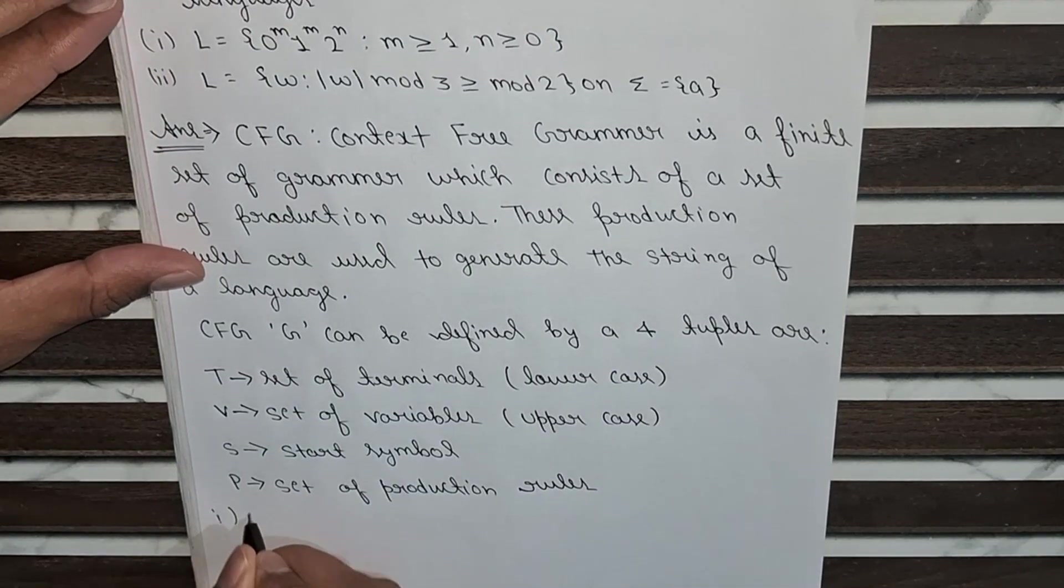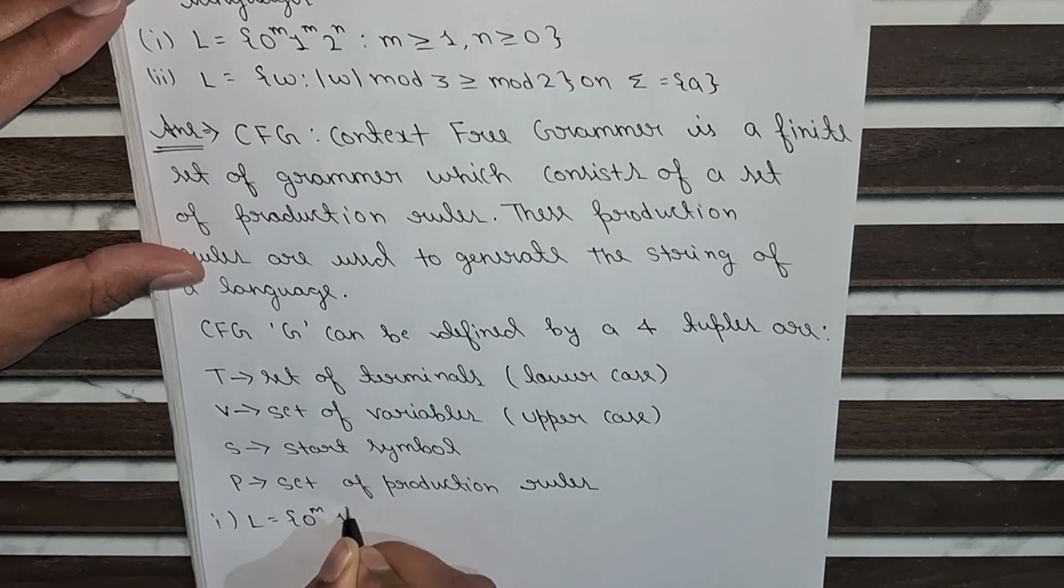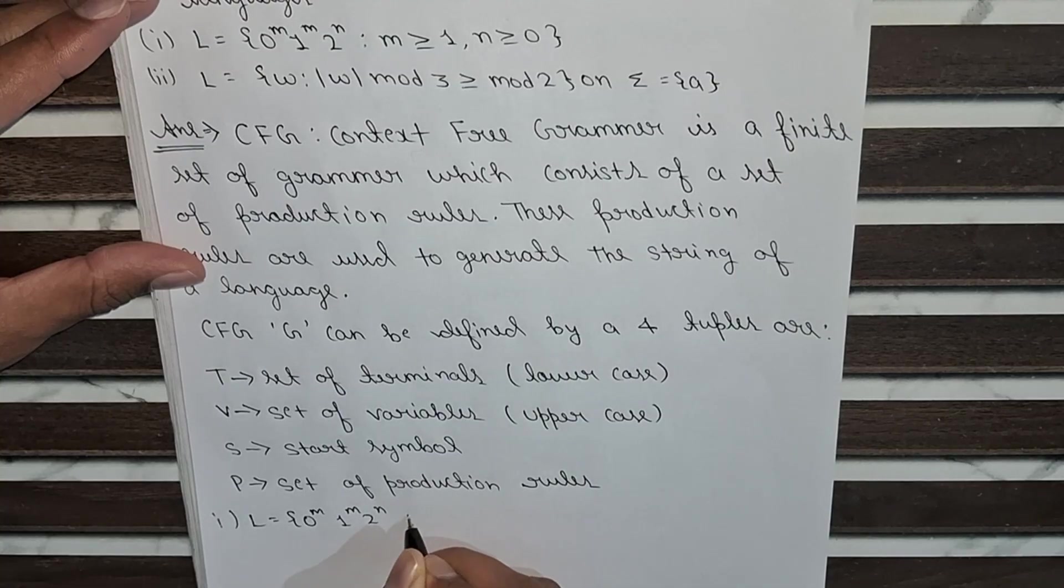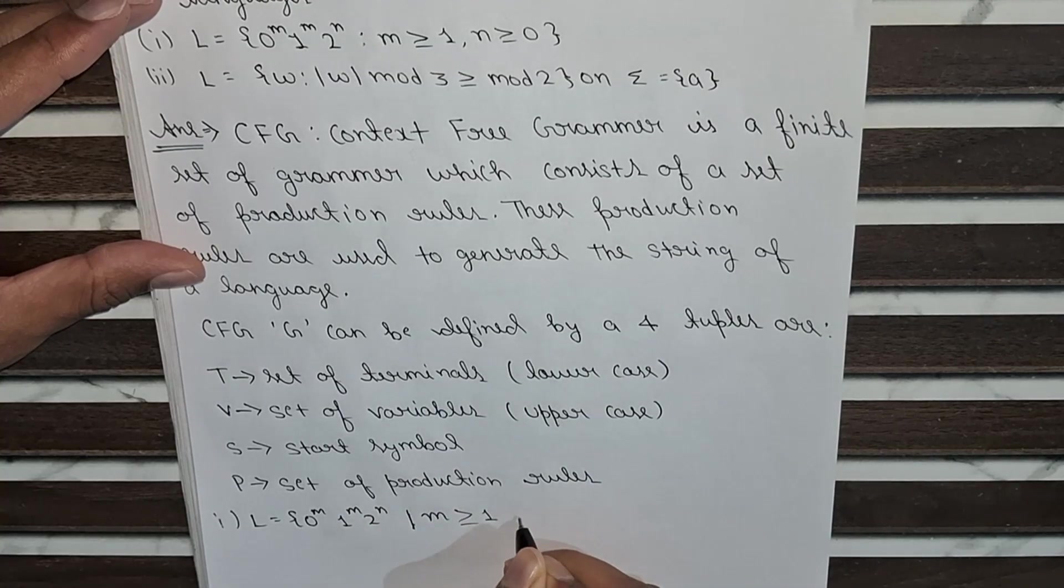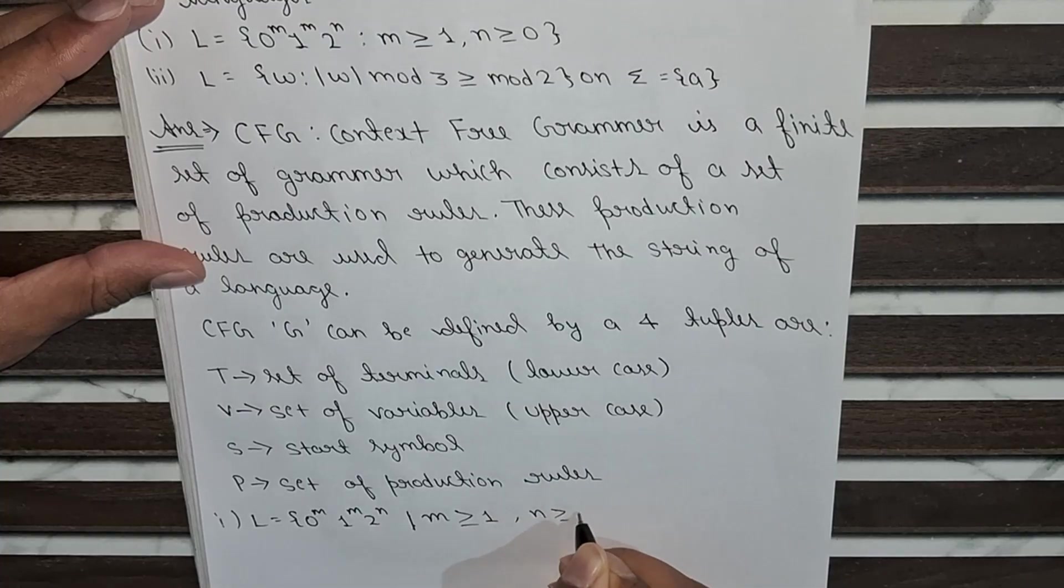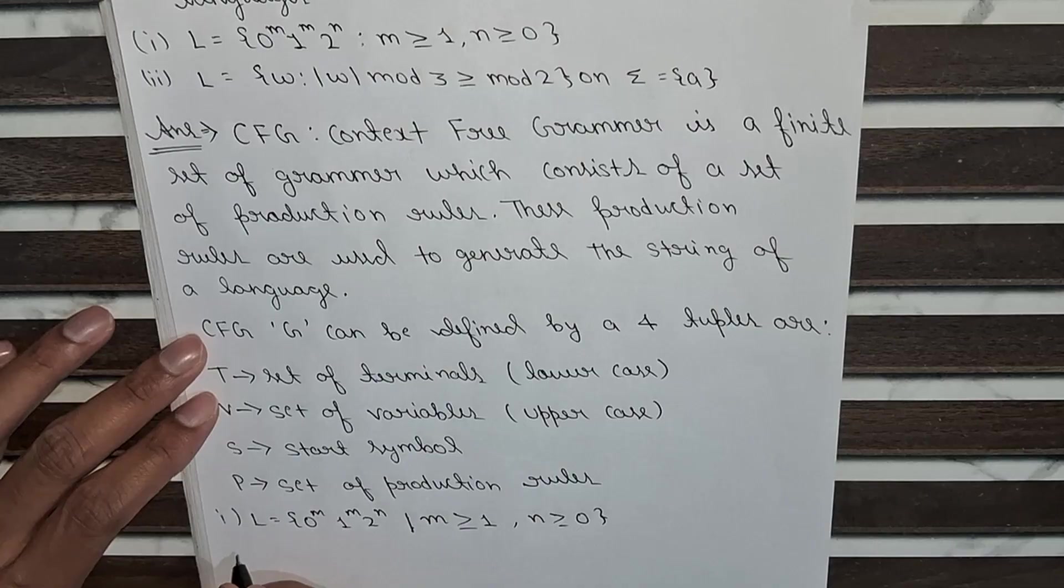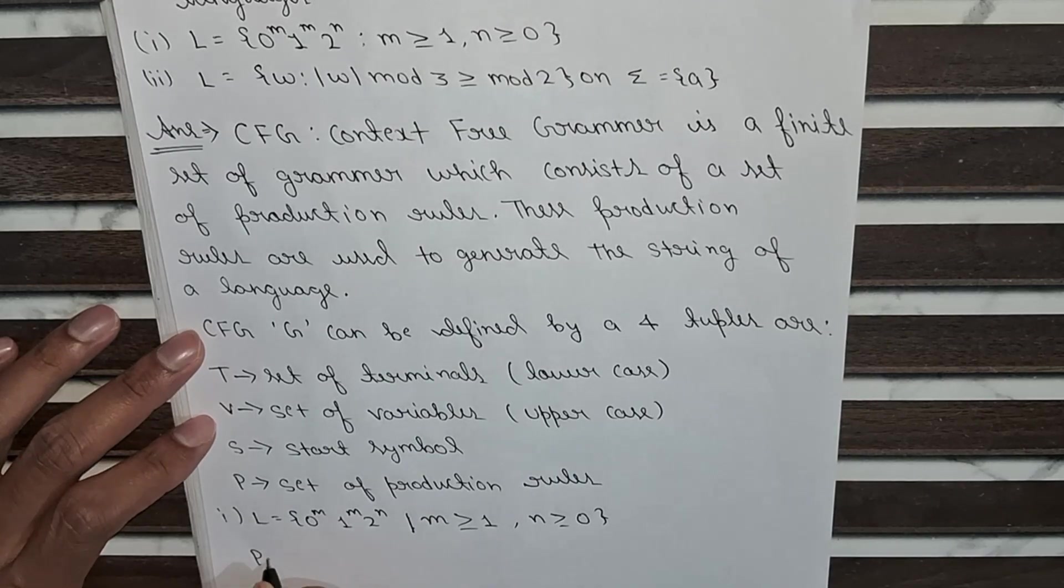So now we will move to the first part, which is L equals 0 to the power m, 1 to the power m, and 2 to the power n, where m is greater than or equal to 1 and n is greater than or equal to 0. So here we have to write the context-free grammar for this language.